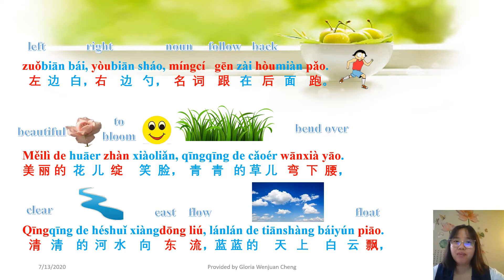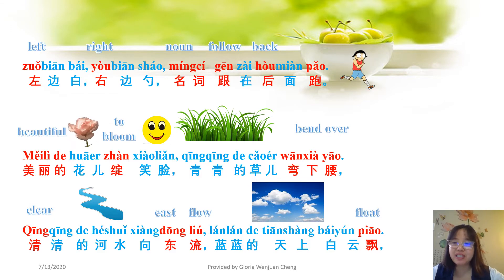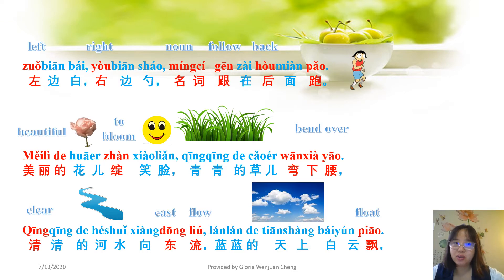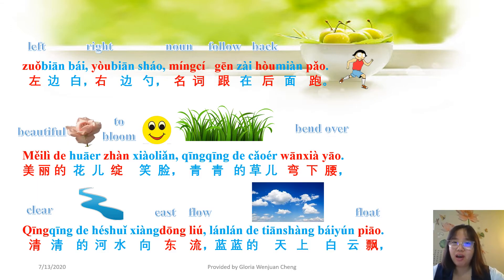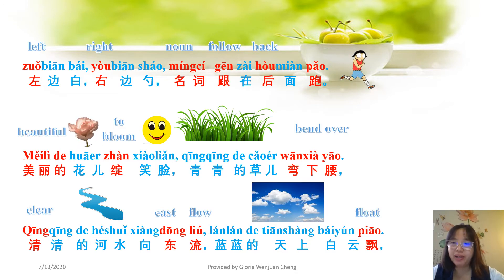左边白, 右边少, 名词跟在后面跑. 左 means 'left', 左边 means 'left side', 白 means 'white', 右边 means 'right side', 少 means 'few'. So 左边白右边少 describes the character 的 (白勺的). 名词跟在后面跑 means a noun follows after it — you use 白勺的 and a noun follows.